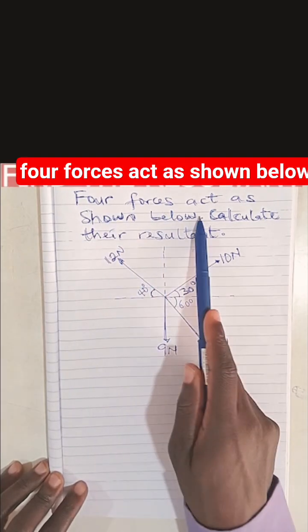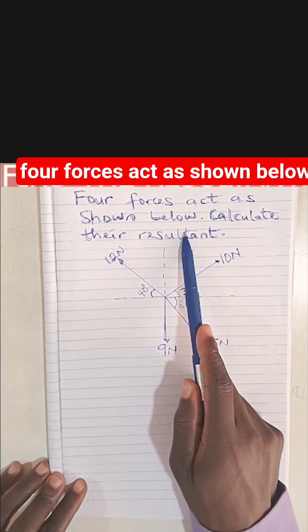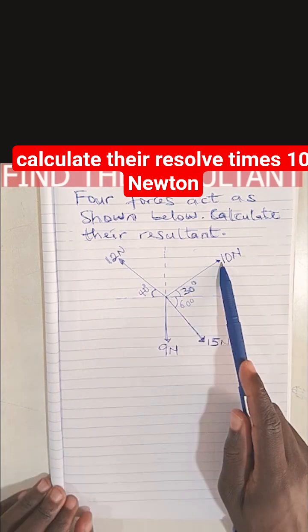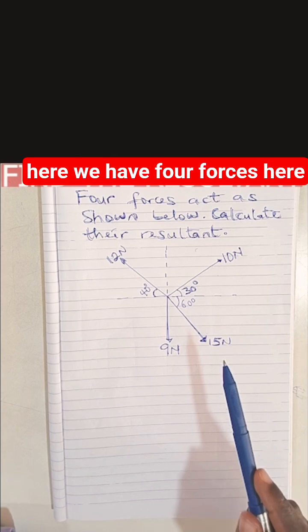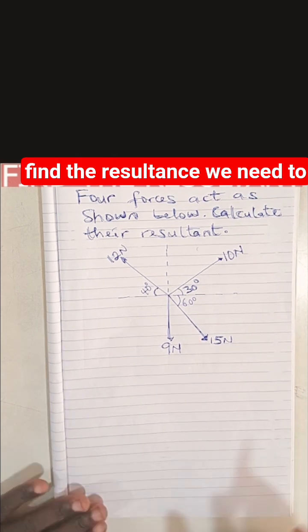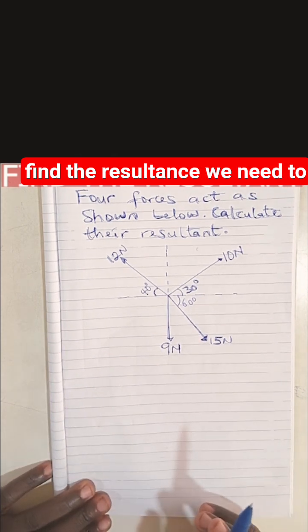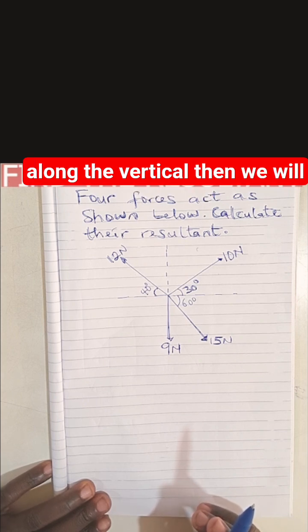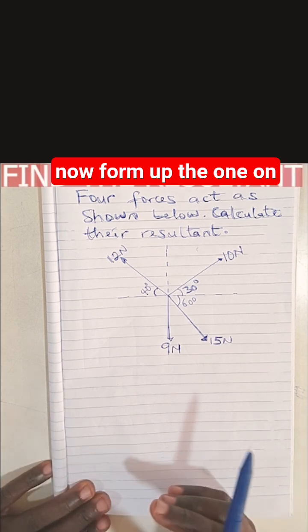Four forces as shown below, calculate their resultant. Here we have four forces. We need to resolve the forces along the horizontal and along the vertical, then we will sum them up.